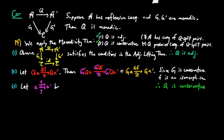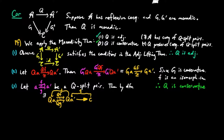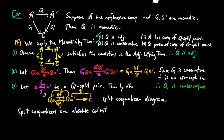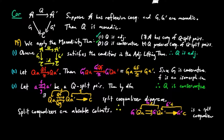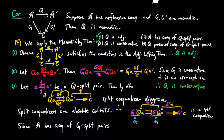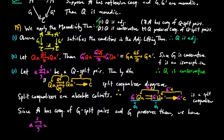For three, let FG be a Q split pair in the category A. Then by definition, there exists a split co-equalizer diagram in the category A prime. But split co-equalizers are absolute co-limits, so the following is a split co-equalizer in the category E. But G prime Q is equal to G, which shows that FG is a G split pair in the category A. And since the category A has co-equalizers of G split pairs and G preserves them, we have the existence of the following co-equalizer diagram in the category A, with GB isomorphic to G prime C, since G preserves its co-equalizer.